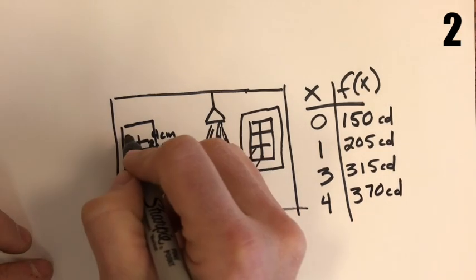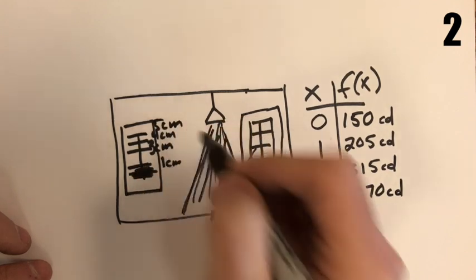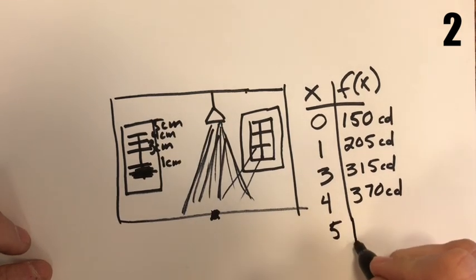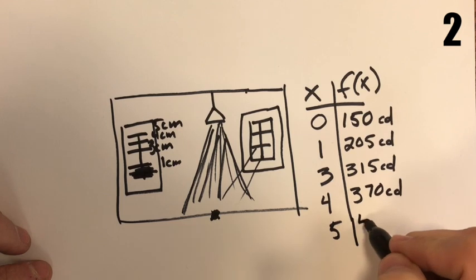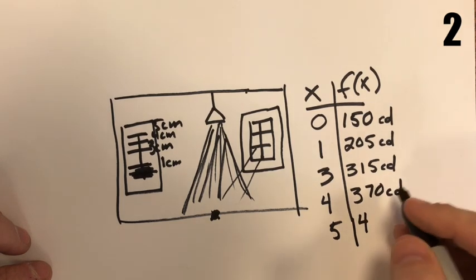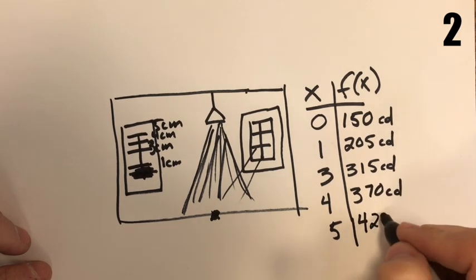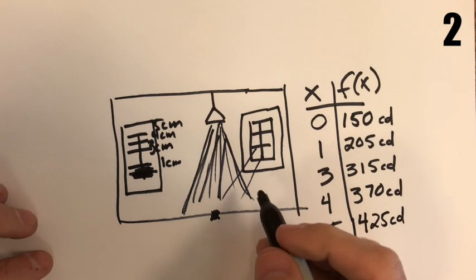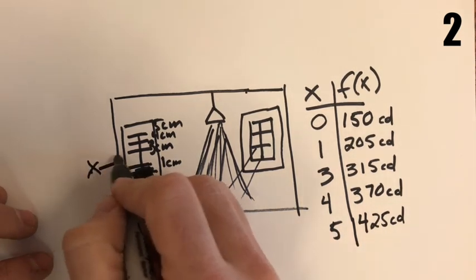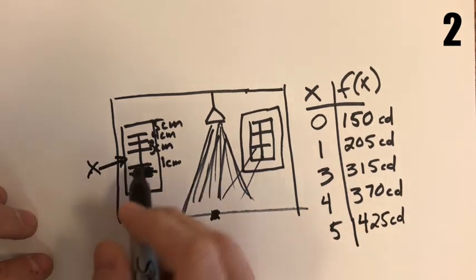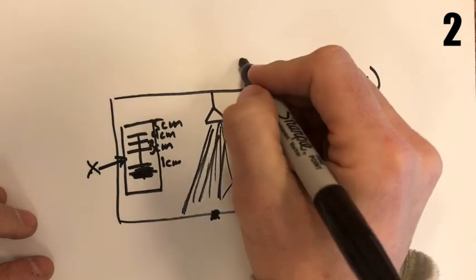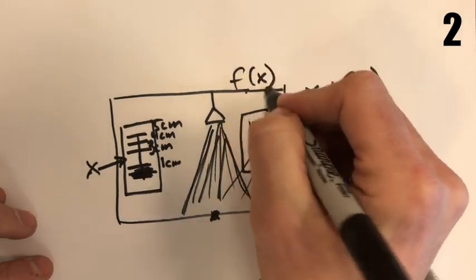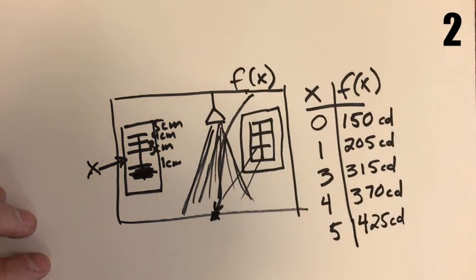At five centimeters — the full way up — we've got 425 candelas. So if x is the height that this dimmer switch is from the bottom and f(x) is the luminous intensity hitting that spot on the floor, that completes this scenario.